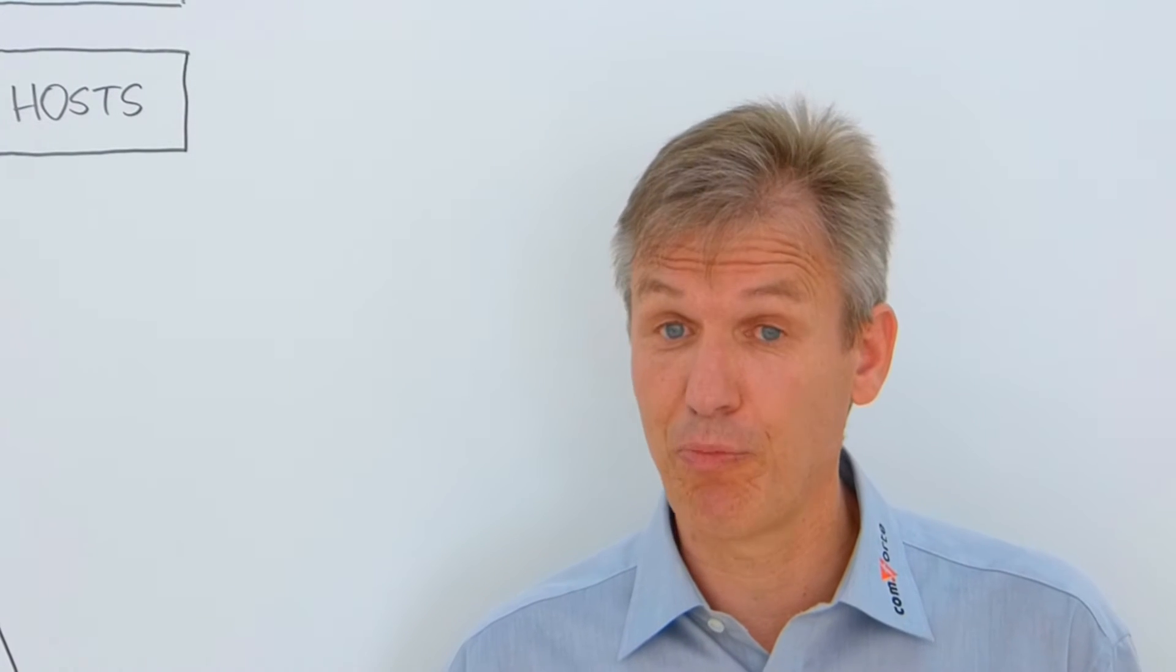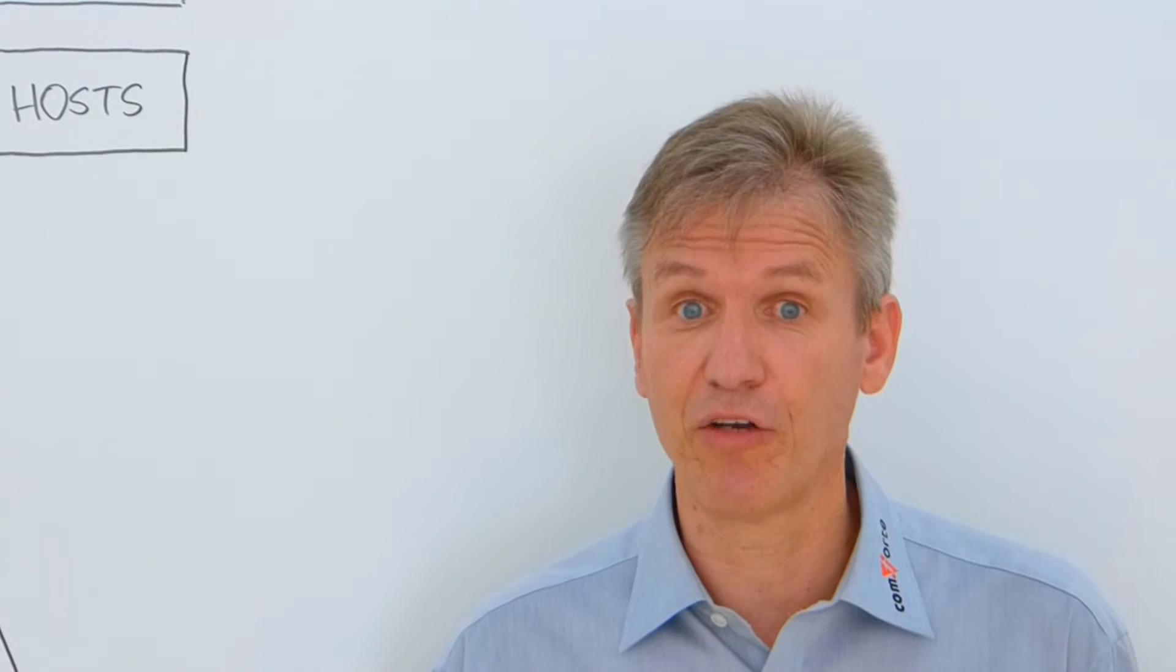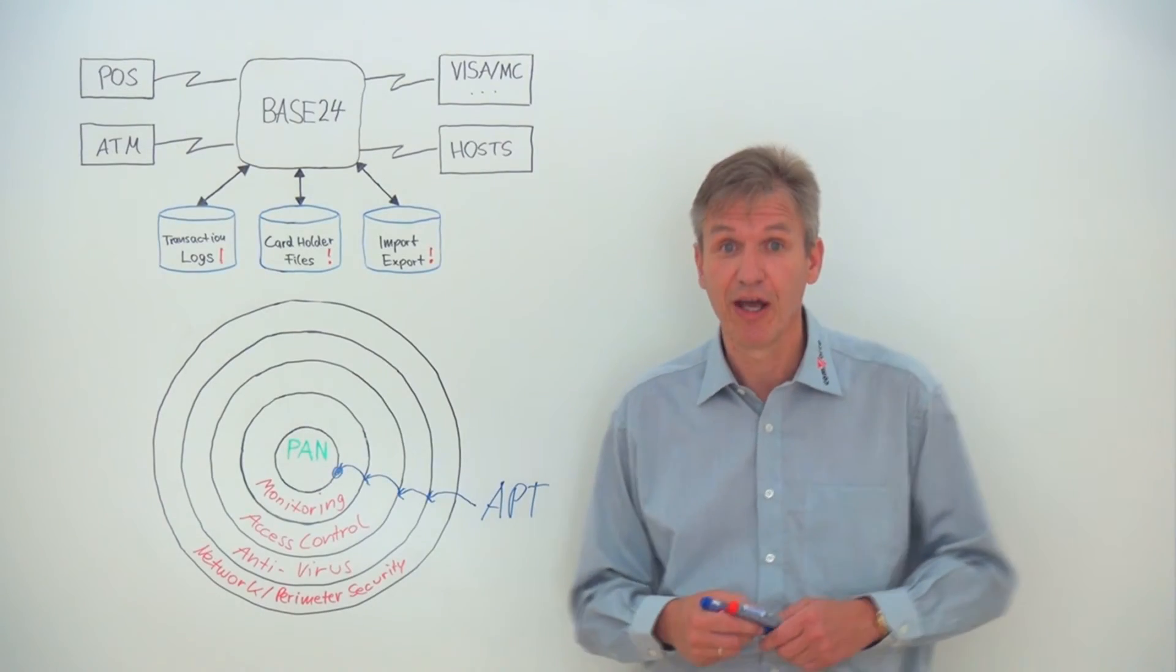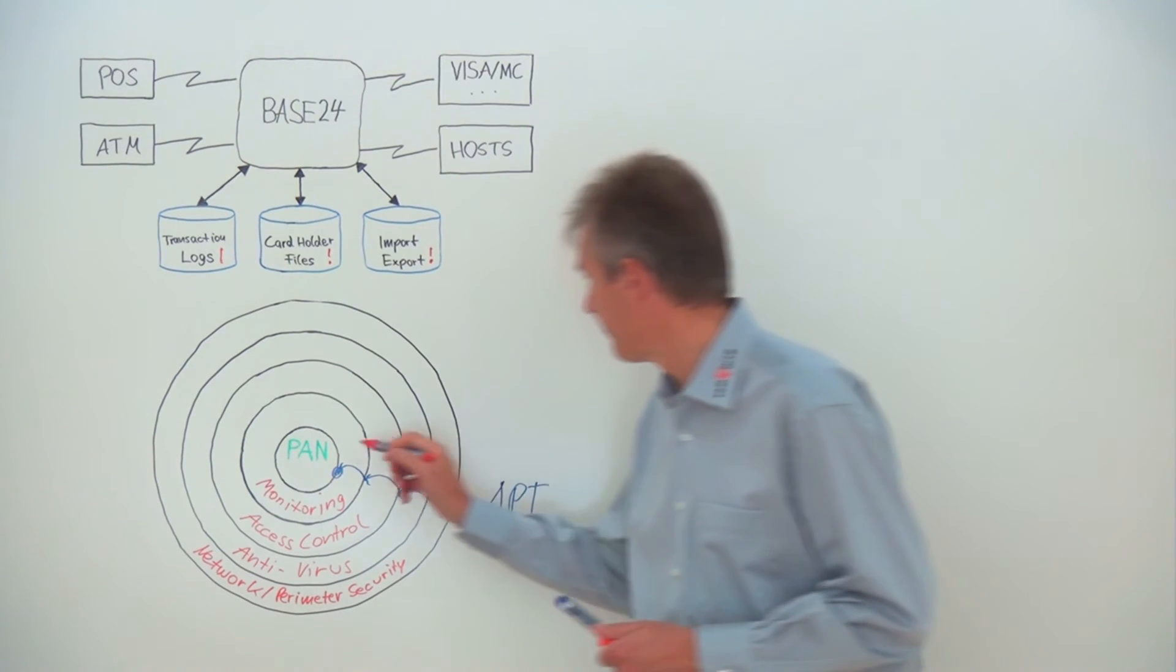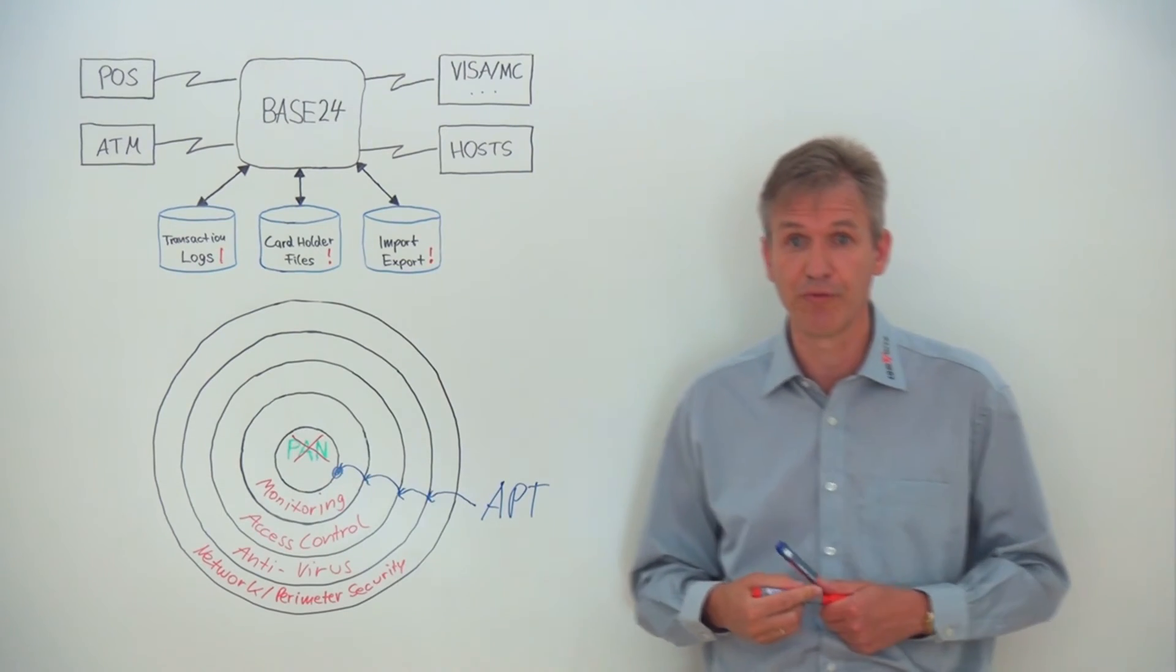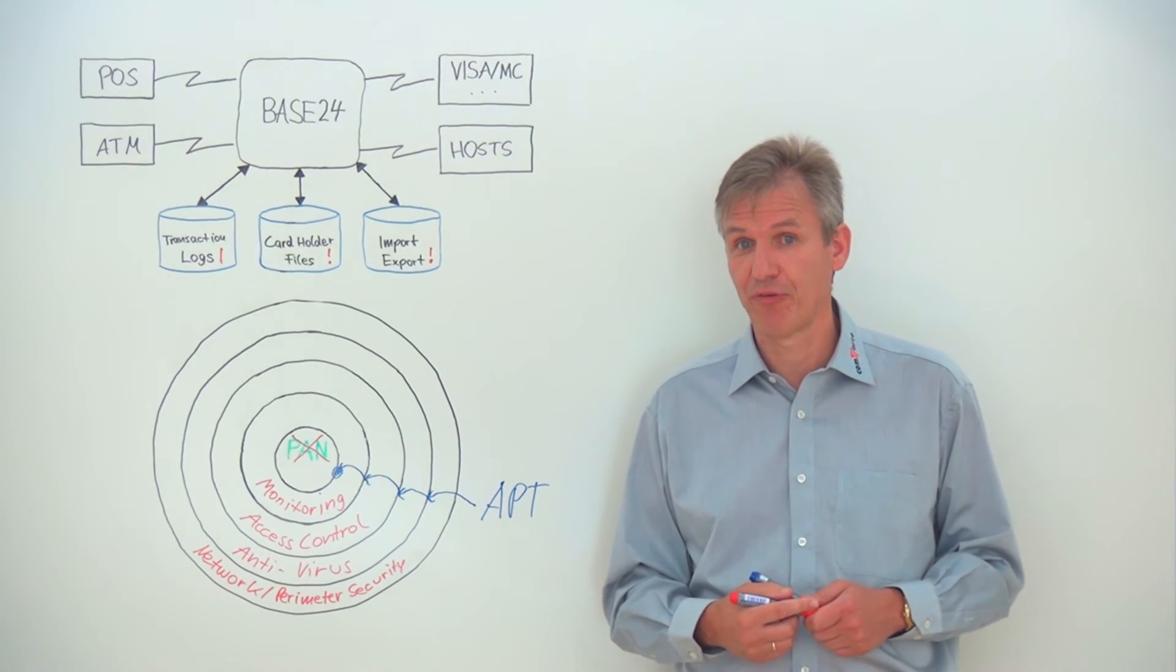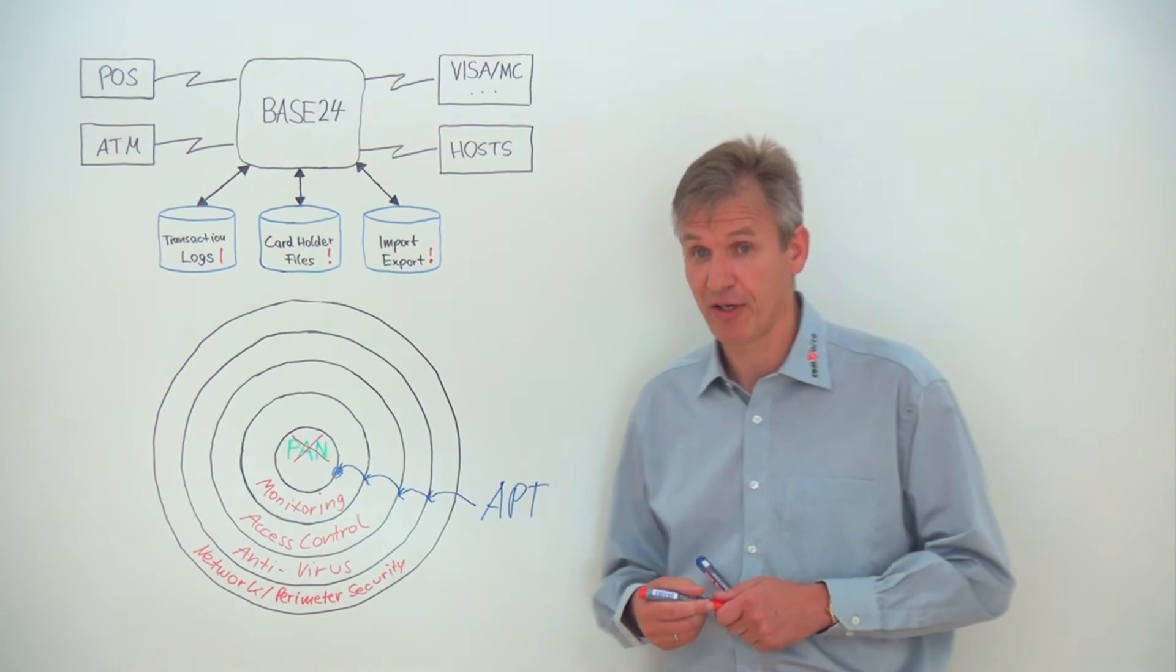Here, PCI requirement 3.4 comes into play. Even when credit card information is stolen, misplaced, lost or misused, it's protected as long as the PAN is rendered unreadable. So, the PAN is basically taken out of the picture. Rendering the PAN unreadable is your last line of defense. That's why it is a core requirement of the PCI standard.